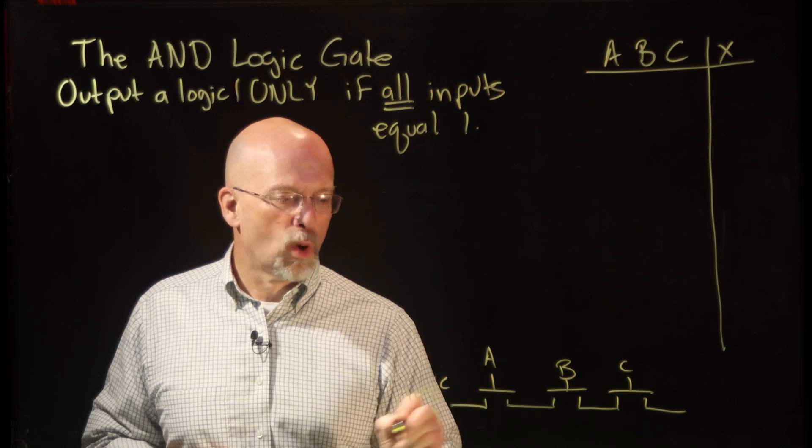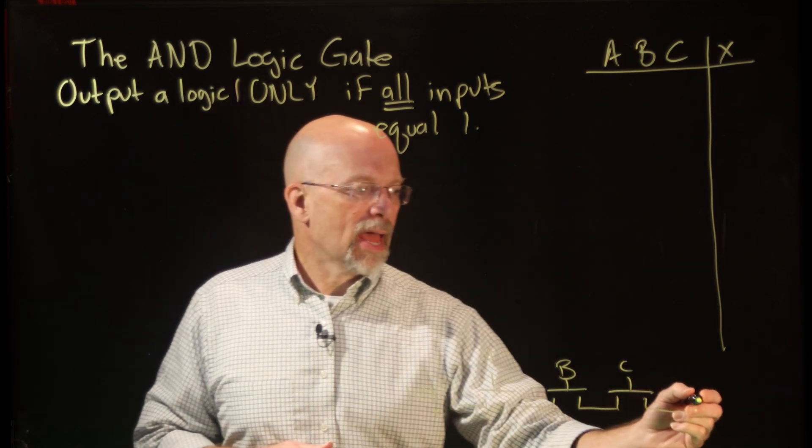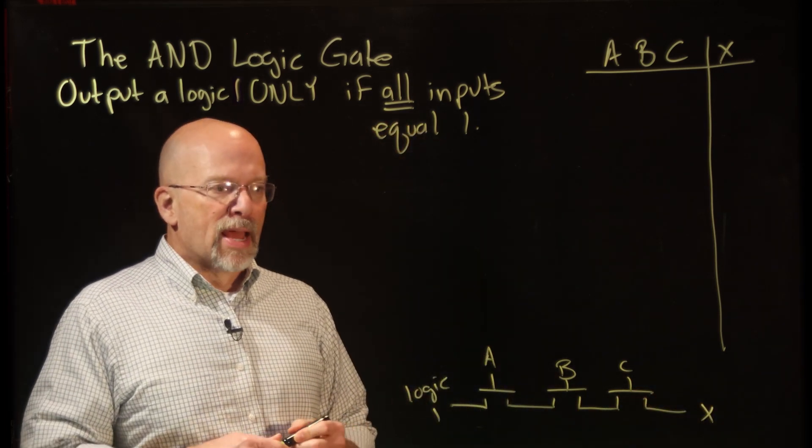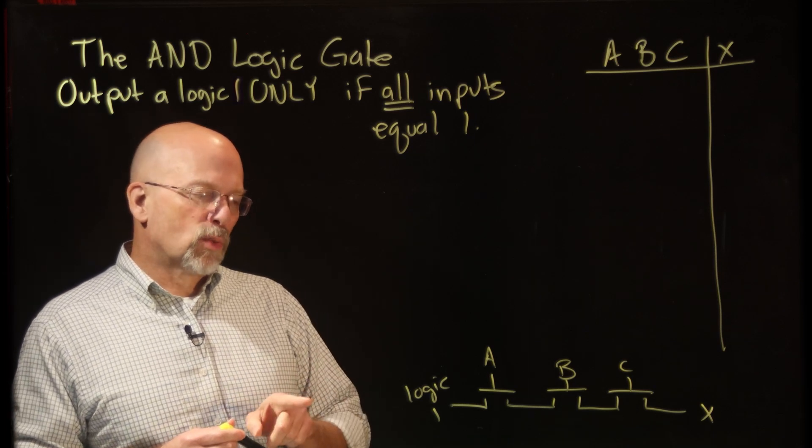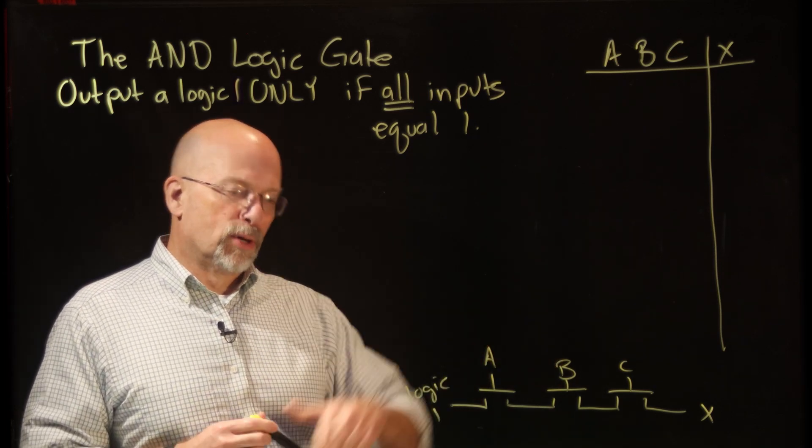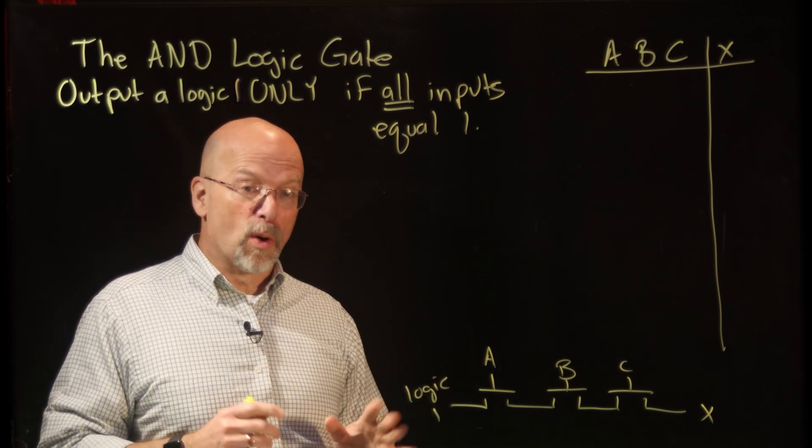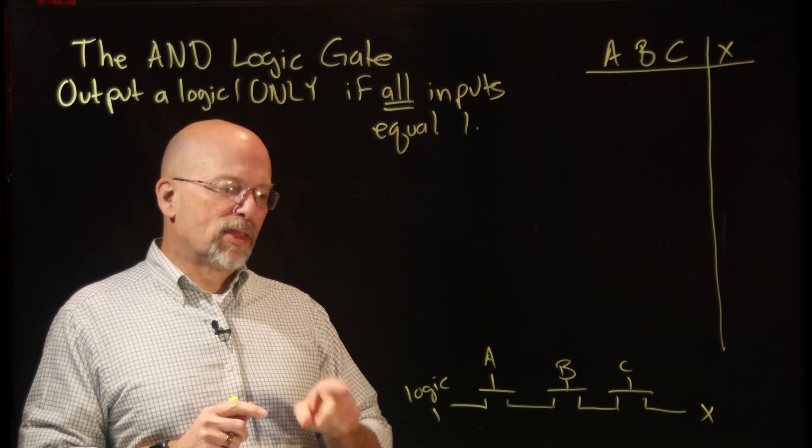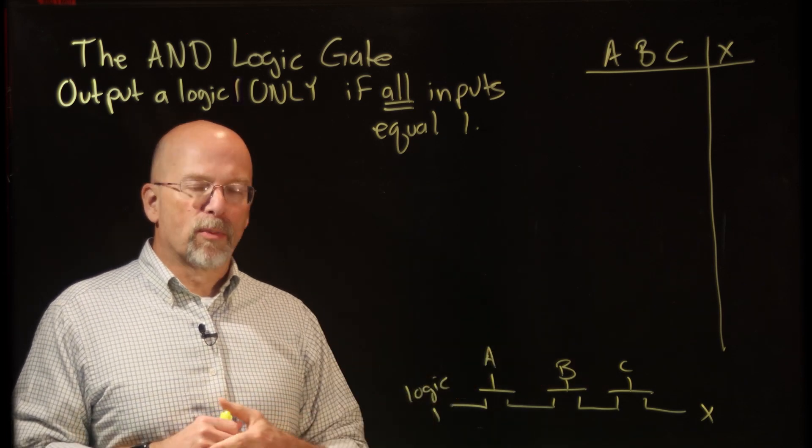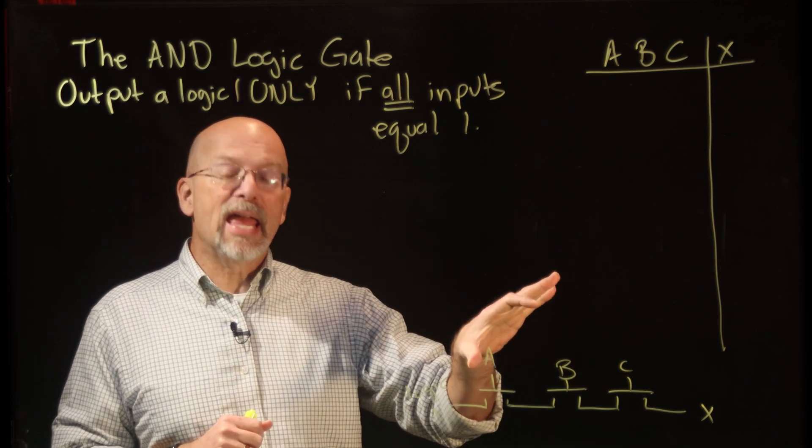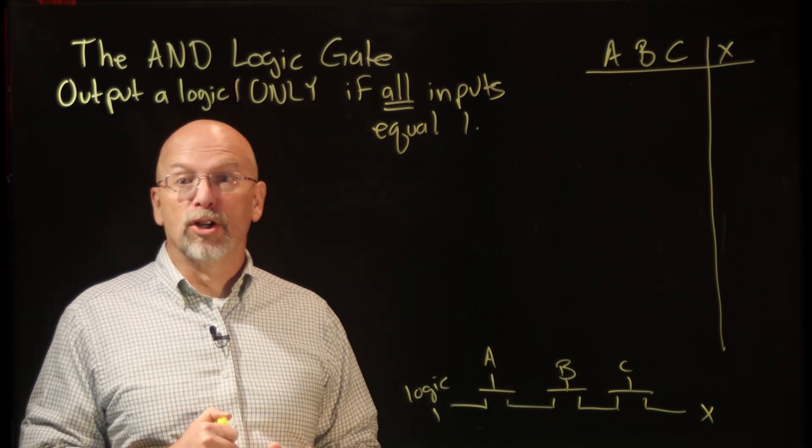Let's say I have a logic 1 on this side and X is on the output. Now how do I get this logic 1 to go all the way to the output? Pushing just A by itself won't work. Pushing A and B by themselves won't work. The only way that logic 1 can get all the way from one side to the other side is if A and B and C all three of them are pushed at the same time.